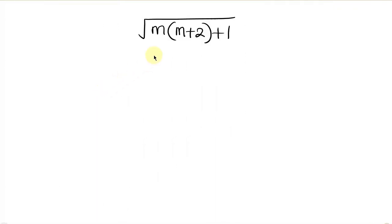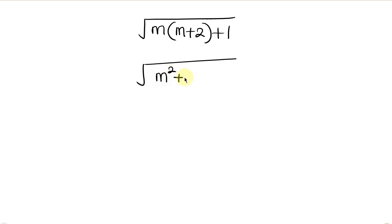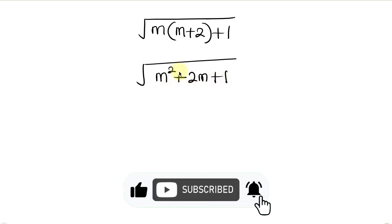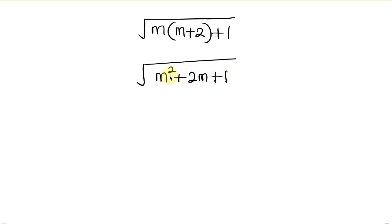Our next step will be for us to open up the bracket. So we have the square root of m times m is m squared, plus m times 2 is 2m, and then plus 1. Now you notice that we have a quadratic expression here.